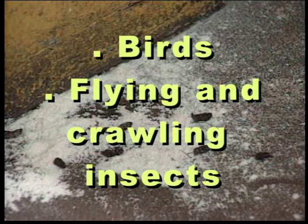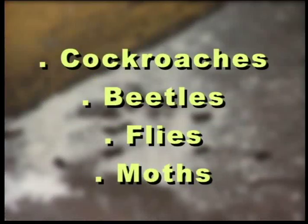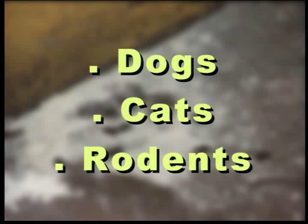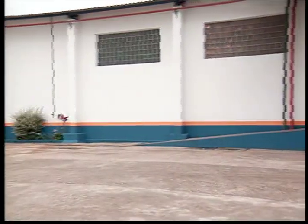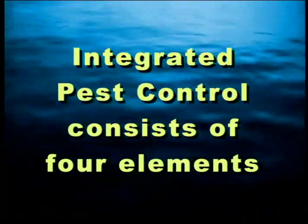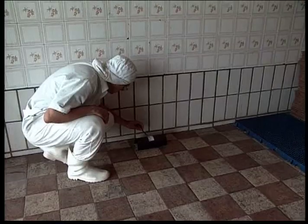Pests, including birds, many flying and crawling insect species such as cockroaches, beetles, flies, and moths, in addition to dogs, cats, and different species of rodents, can cause diseases in consumers through microbial contamination. Integrated pest control consists of four elements: prevention of access, prevention of nesting, eradication, and monitoring.